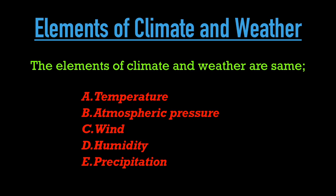Temperature is the degree of hotness or coldness. Atmospheric Pressure is the pressure exerted by the atmosphere on us, usually taken as 1 atmosphere or 1.0135 bars. Wind is simply flowing air. Humidity is the amount of water vapour present in the air. And the last element, Precipitation, is anything falling from clouds in the sky — it includes snowfall, rainfall, and hail.